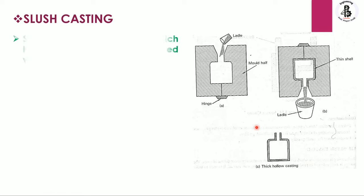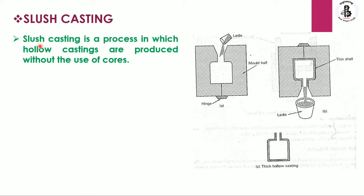So let us start. Slush casting is a process in which hollow castings are produced without the use of cores. That is the major advantage of the slush casting process — making hollow castings without a core.